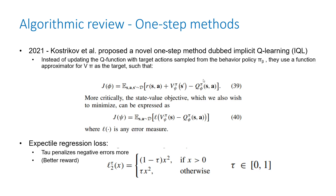The formula from Kostrikov's 2021 paper estimates the value function instead of alternating between policy evaluation and policy improvement. A special loss function is used that penalizes more when you have a negative value and penalizes less when you have a positive value. The intuition is: positive value means good reward, so you want high reward while staying as close as possible to the data.